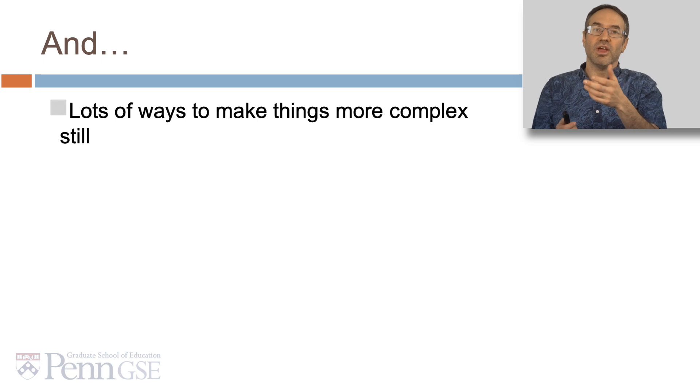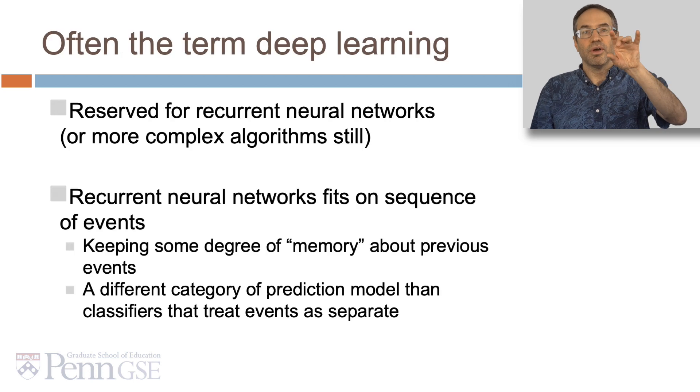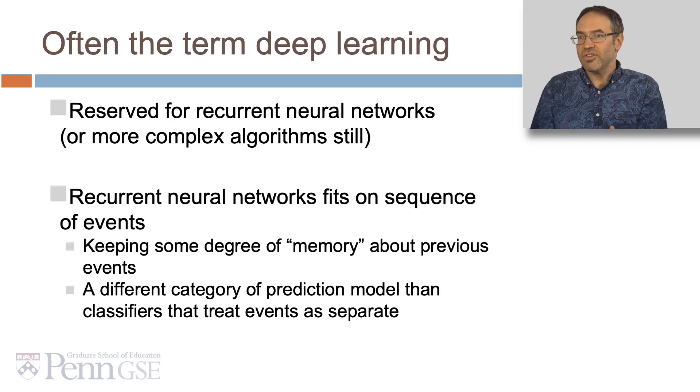You're probably saying, this is kind of complex, but don't worry. There's lots of ways to make things more complex still. Often the term deep learning isn't actually reserved for just multiple hidden layers. It's reserved for recurrent neural networks, or more complex algorithms still. Recurrent neural networks fit on sequence events. They keep some degree of memory, quote unquote, about previous events. This is a different category of prediction models than classifiers that treat events as separate.